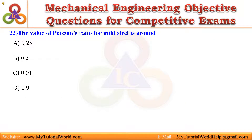Question 22. The value of Poisson's ratio for mild steel is around. A. 0.25. B. 0.5. C. 0.01. D. 0.9. Answer is: 0.25.